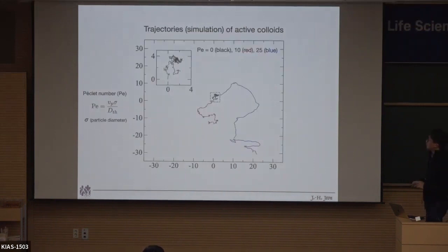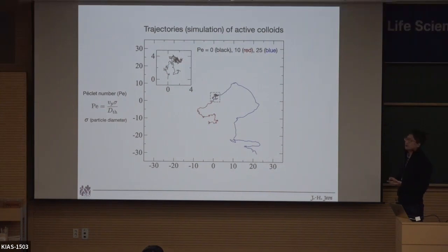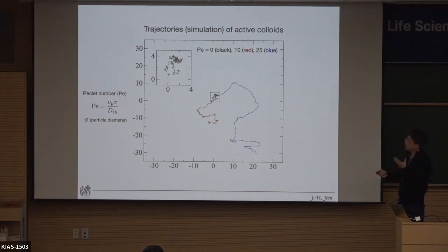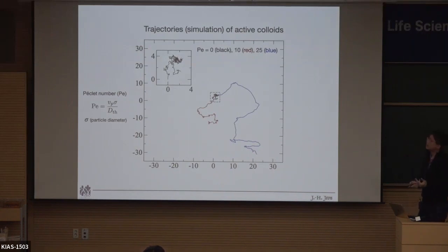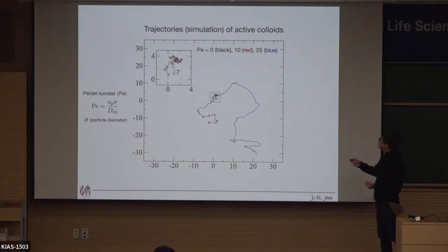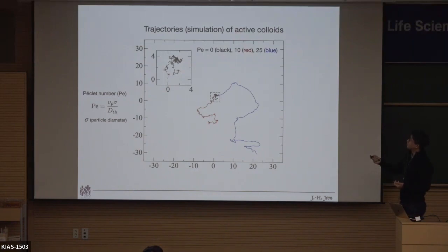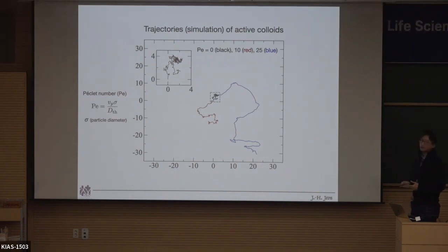We can simulate this active Brownian particle and define how strong the active motion is using what we call the Peclet number — a measure to quantify the activity of the particle. The Peclet number is essentially the ratio of active mobility to thermal mobility; a value of 1 means active drift equals thermal motion, and larger than 1 means activity dominates. You can see that when the Peclet number is 0, the particle shows ordinary Brownian motion. Adding activity and self-propulsion dynamics produces directional motion, which looks pretty different.